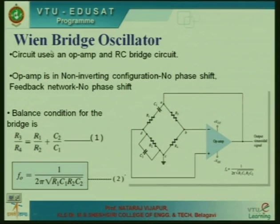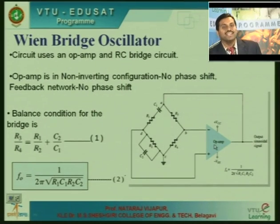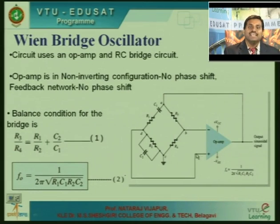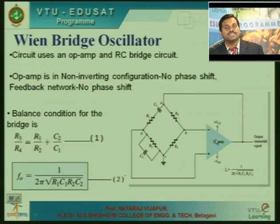The next oscillator to discuss is the Wien bridge oscillator. This is different from the oscillators discussed so far. This Wien bridge oscillator makes use of an op-amp configured in a non-inverting mode, which does not introduce any phase shift — it introduces 0 degrees phase shift.